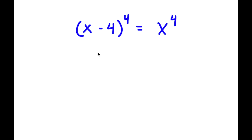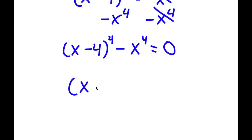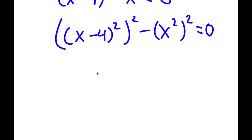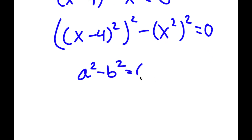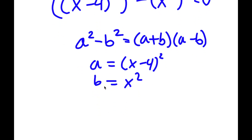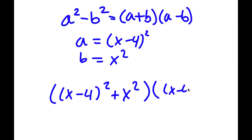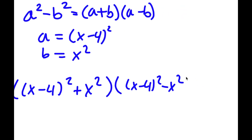In this problem, I have x minus 4 to the power of 4 is equal to x to the power of 4. To solve this, I'm going to subtract x to the power of 4 on both sides, so I have x minus 4 to the power of 4 minus x to the power of 4 is equal to 0. I'm going to rewrite this as x minus 4 squared to the power of 2 minus x squared to the power of 2 equal to 0. Using the difference of squares form a squared minus b squared equals a plus b times a minus b, where a is x minus 4 squared and b is x squared, I get x minus 4 squared plus x squared times x minus 4 squared minus x squared is equal to 0.